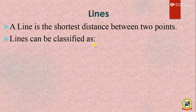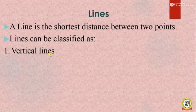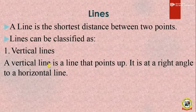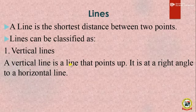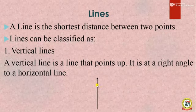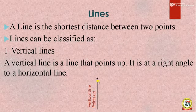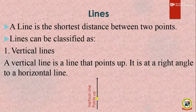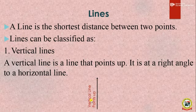Lines can be classified as: one, vertical line. A vertical line is a line that points up. It is at a right angle to a horizontal line. This is an example of a vertical line. So when you stand straight, you are standing vertically. All human beings standing are said to be standing in a vertical position.